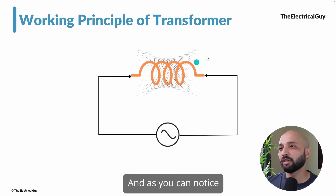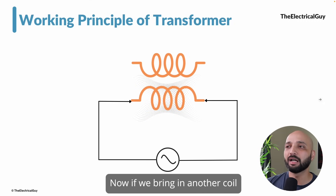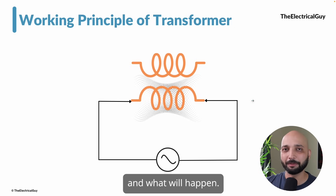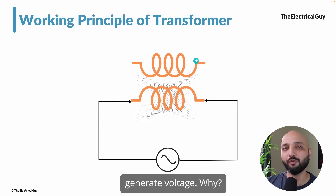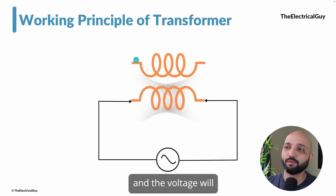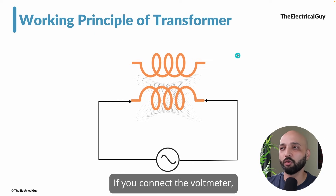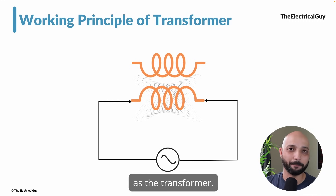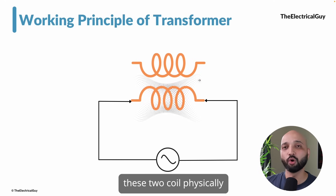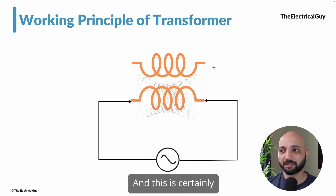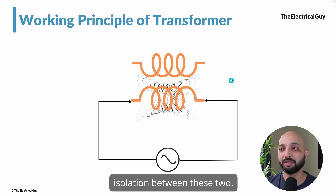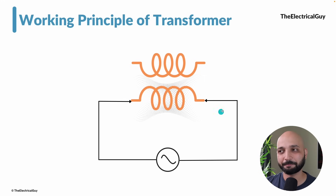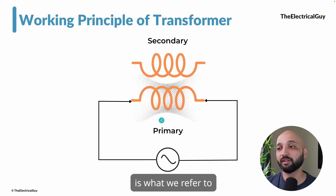Using the coil, you can see it is generating flux around it. Now if we bring another coil near to this coil, that second coil will also generate a voltage — because the rotating magnetic field interlinks with it through mutual inductance, and voltage is generated across it. If you connect a voltmeter, it will have a reading. This combination of two windings is what we refer to as the transformer — the two coils are not physically connected by wires, yet we still have voltage across the second coil.